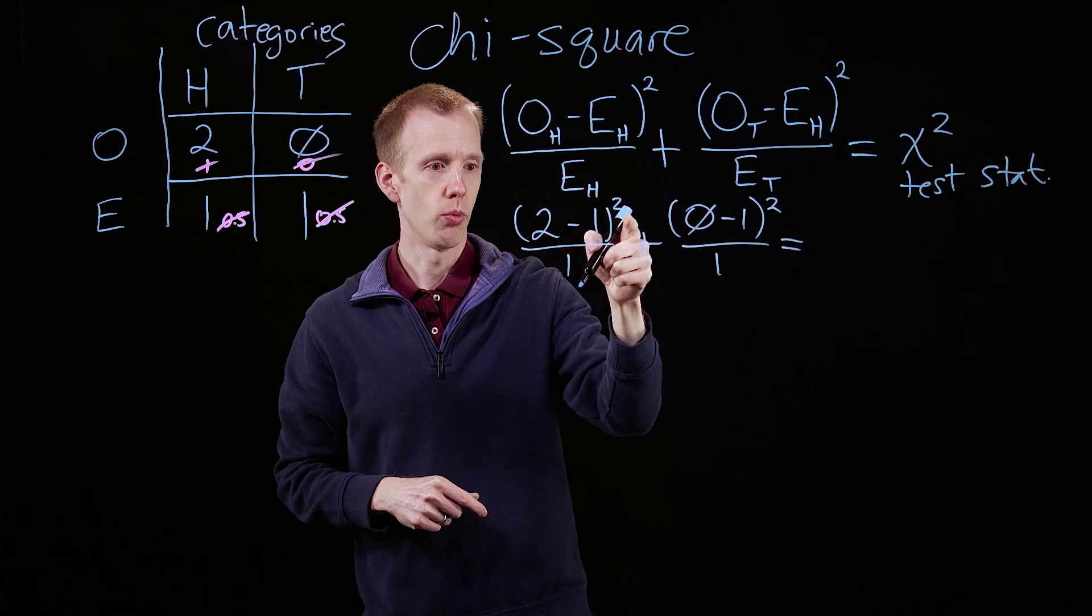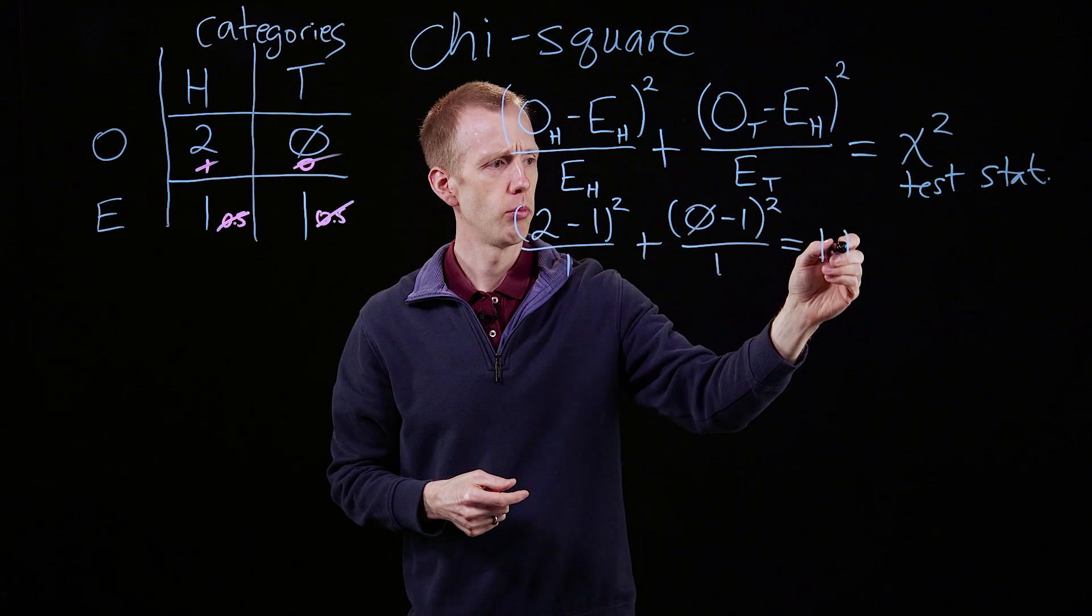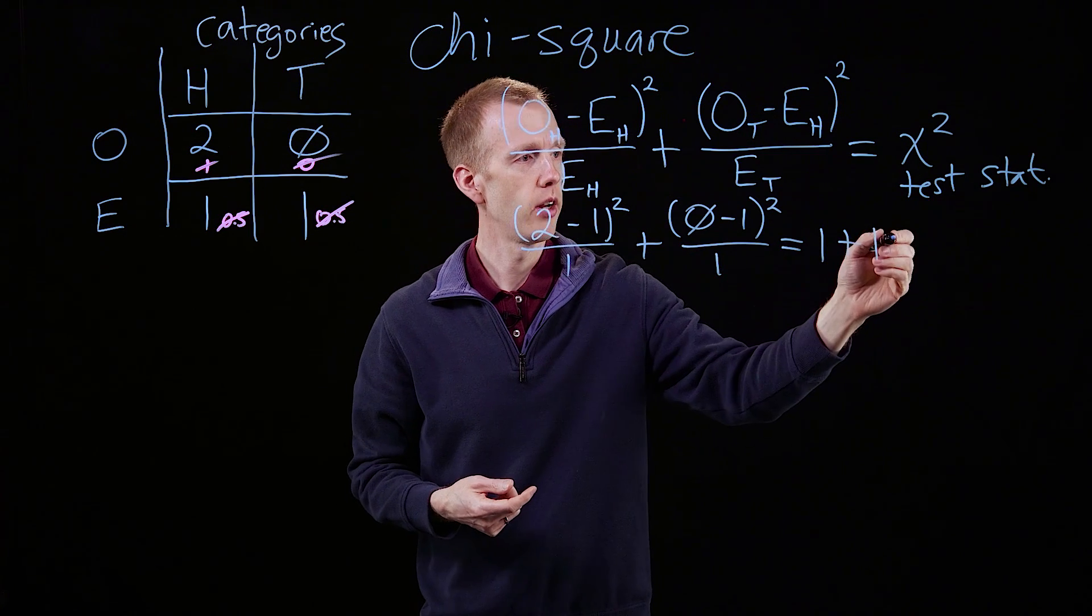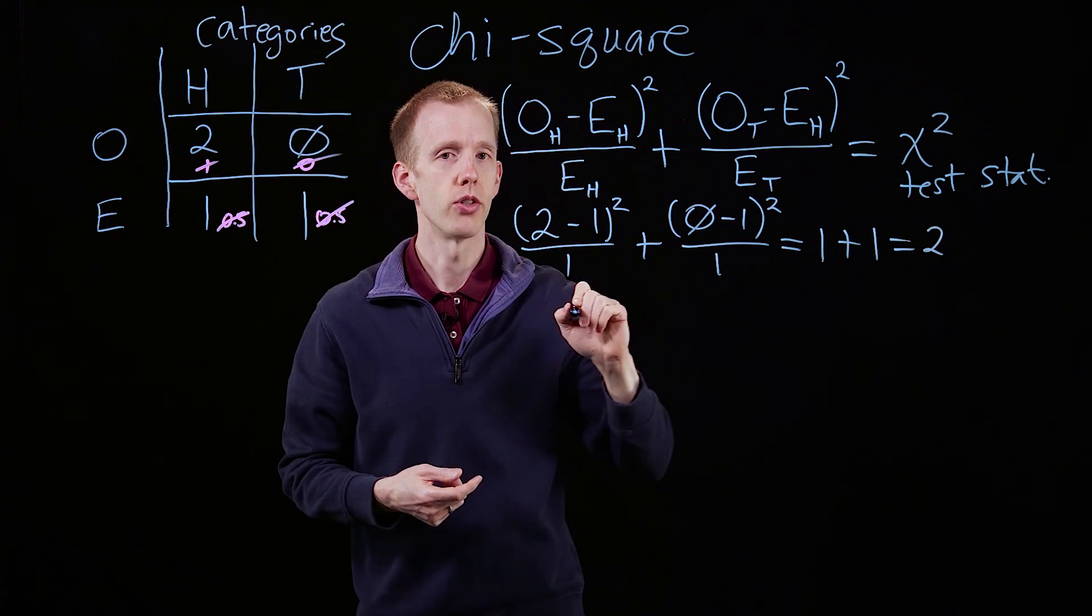So two minus one squared is one, divided by one is one, plus negative one squared is one, divided by one is one, so we're adding one plus one. Our chi-square value is two.